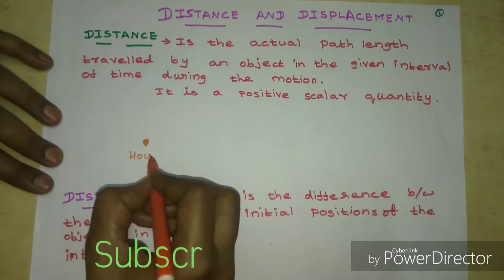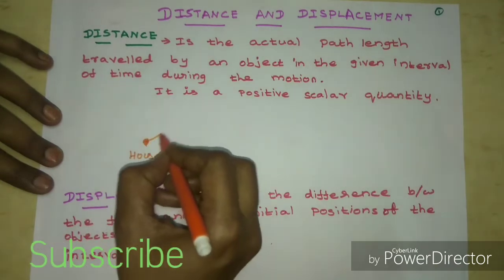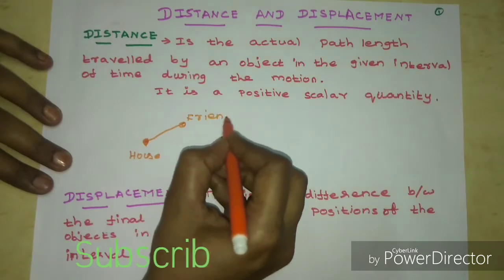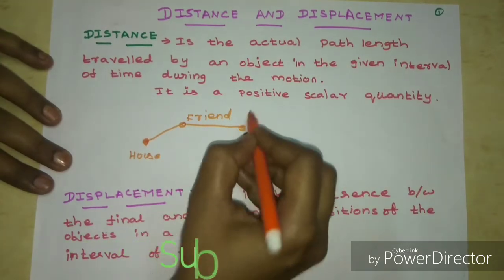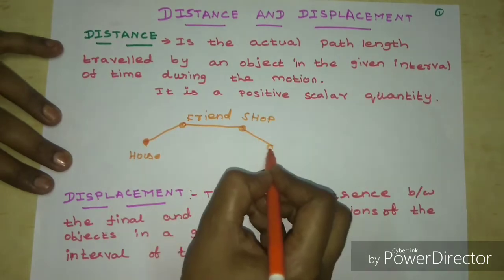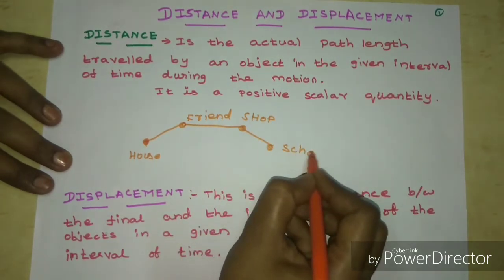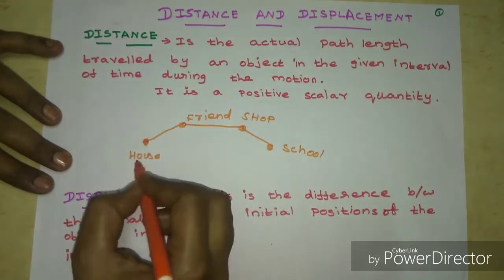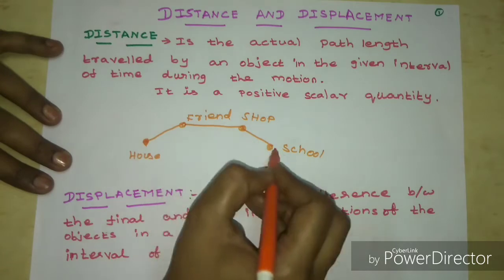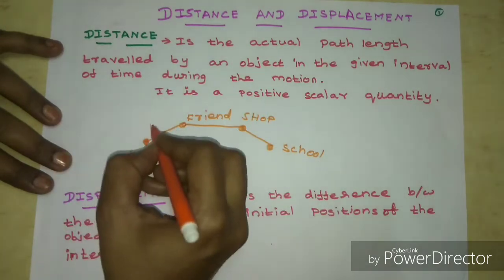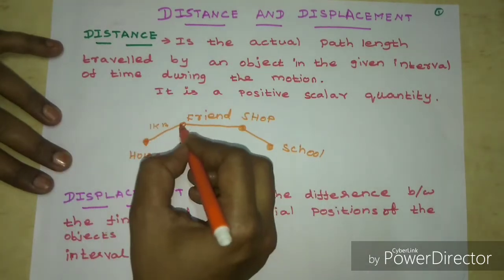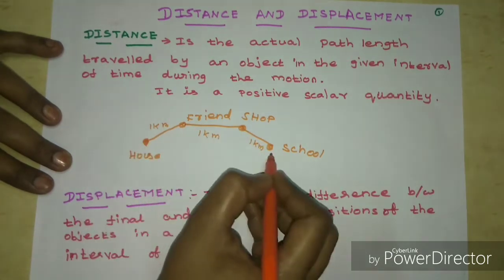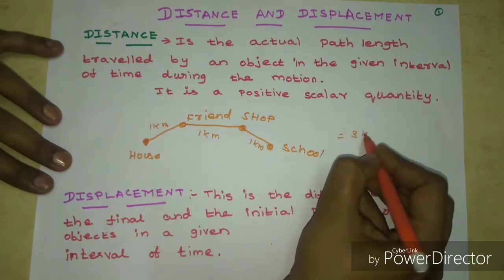Let's look at an example. Suppose you go from your starting point to a shop — that is 1 km — and then from the shop to school — that is also 1 km — and from school back, another 1 km. You calculate and add each segment. The total distance traveled is 3 km.